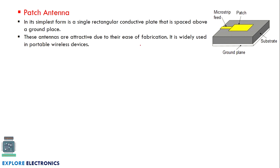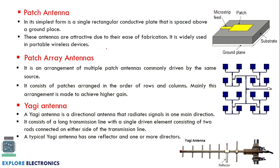A patch antenna is the simplest form — a single rectangular conductive plate. There is a ground plate with a rectangular plate fixed above it. These antennas are attractive due to ease of fabrication and are widely used in portable wireless devices. A patch array antenna is simply multiple patch antennas connected together, arranged in rows and columns, providing high gain.